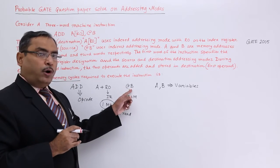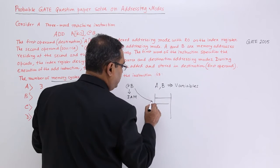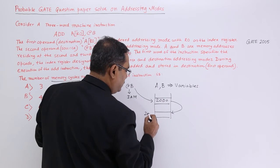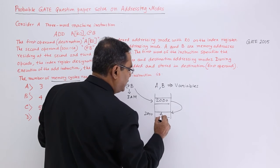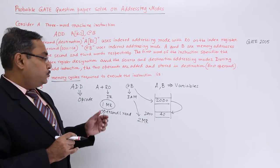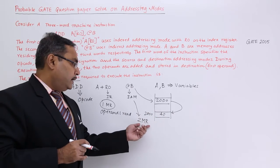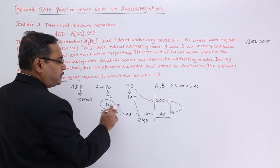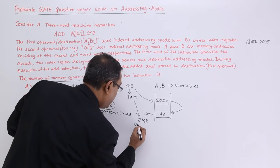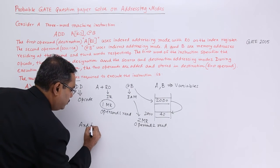In the second case, B is containing the address of the operand. Suppose B is pointing to a location containing 2000 — since it is indirect addressing mode, I shall have to go to location 2000, where I get the data, say 40. So for operand 2, I require two memory reads or memory cycles. Then the result will be stored, which requires another memory cycle — one more for the store operation.